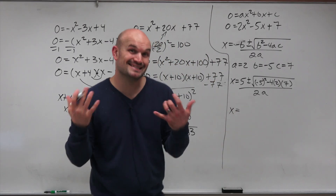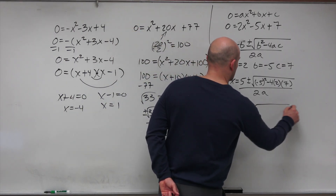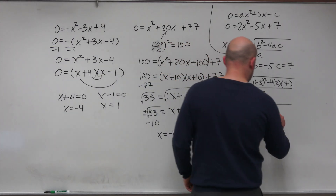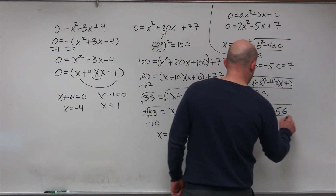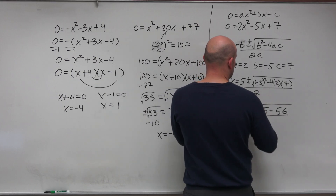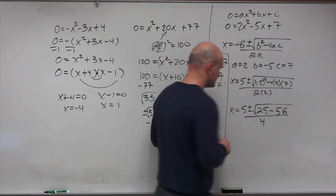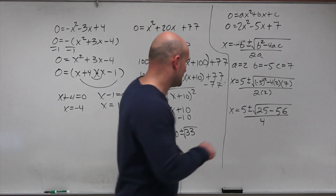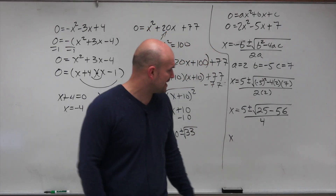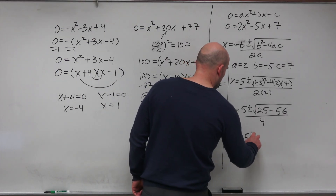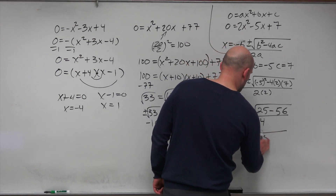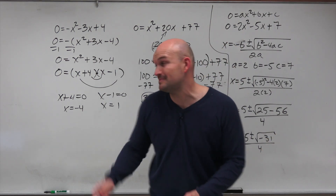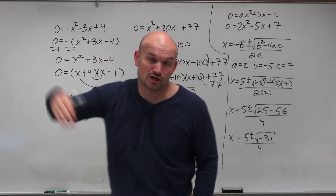Let's simplify: we have 5 plus or minus the square root of 25 minus — negative 4 times 2 is negative 8, times 7 is negative 56 — so that's minus negative 56, all divided by 4. Under the radical, taking 25 minus 56 gives us negative 31. We recognize that's not going to be in our real number system — that's going to be in our imaginary system. So that would have been something pretty difficult to try to factor across complex numbers.